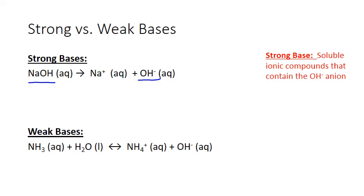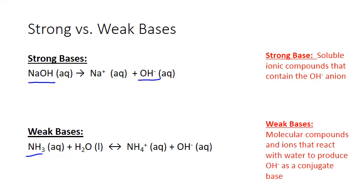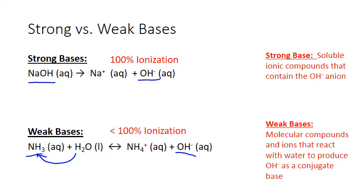Molecular bases, on the other hand, like ammonia, are weak bases, and they react with water to produce hydroxide ion as the conjugate base of the water — they accept a hydrogen from the water molecule. What distinguishes a strong base from a weak base is the identity, whether it's an ionic compound or a molecular one, but also the degree of hydroxide ion production. For a strong base, dissociation of the ionic compound is complete, or 100%. For the weak base, it's less than 100%.